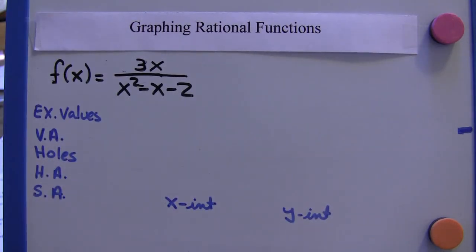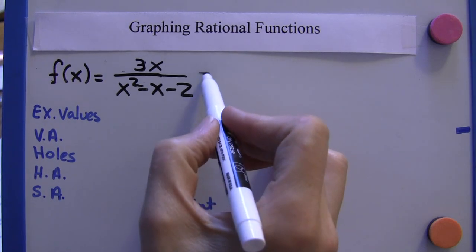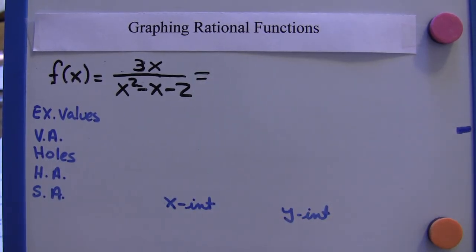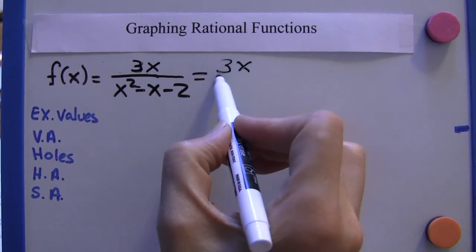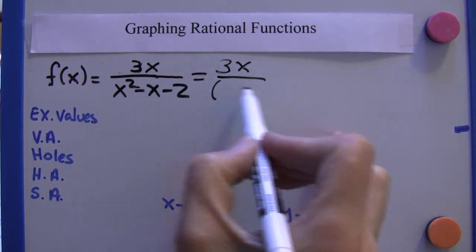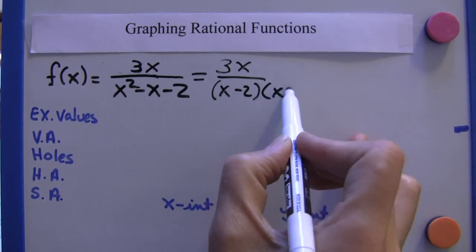So going right into this example here, we have a function: 3x over x squared minus x minus 2. The first thing we want to do is simplify this or make sure we can't reduce anything. So we're going to go 3x. And in the denominator, we can factor this to x minus 2, x plus 1.